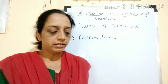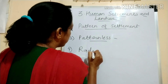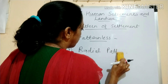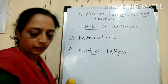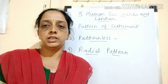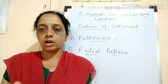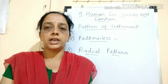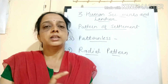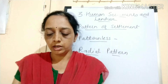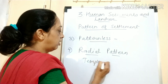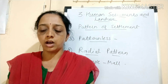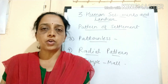The next is radial pattern. The radial pattern is when settlements grow around a central object. It means at the center some object, some monument, or some facility is there which is a need of people. Around that the settlements are located — it can be a temple or the main mall, any kind of object around which the settlements are growing. That is called radial pattern.